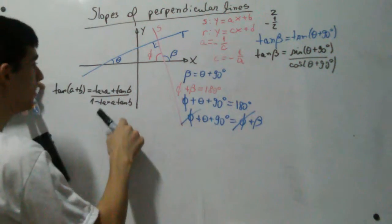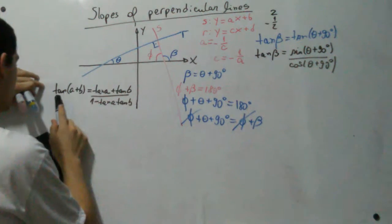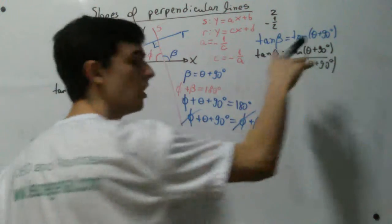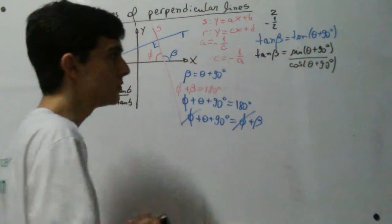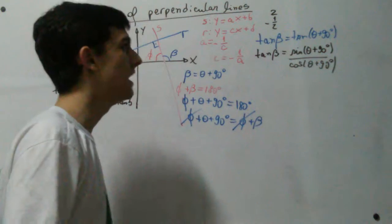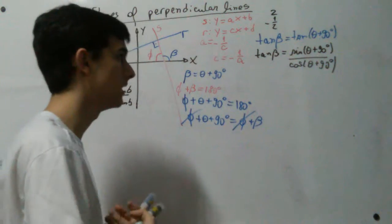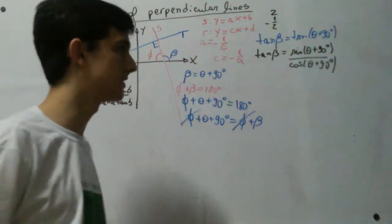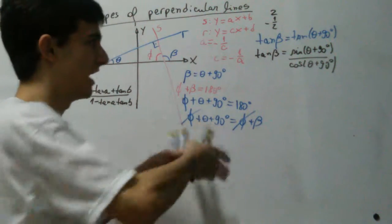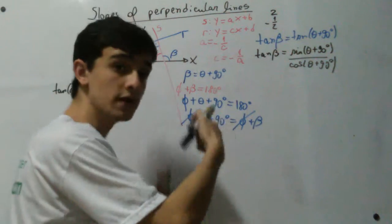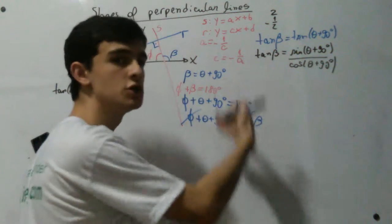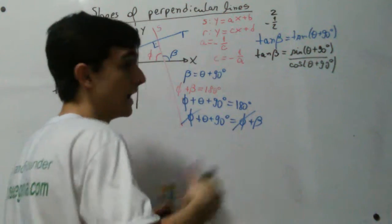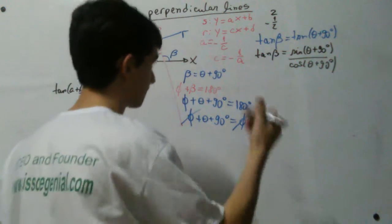We can calculate the tangent of a sum of angles by using the sine and cosine sum formulas. I'm not going to prove those equations in this video — if you don't know them, I recommend you look them up and do a little research to understand where they come from.